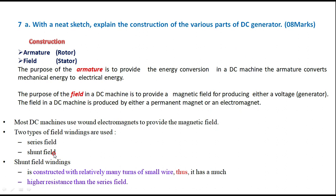There are two types of field windings used: either series or shunt, or a combination of both series and shunt, which is called a compound generator. The shunt field is connected across the armature, whereas the series field is connected in series with the armature. Therefore the series field resistance should be very small and the shunt field resistance should be high, because it is connected across the armature.